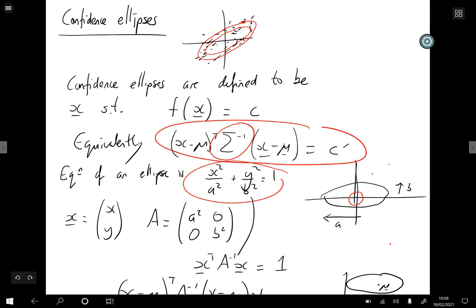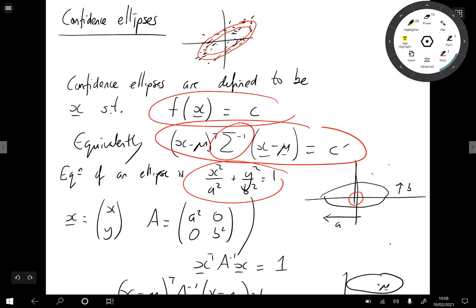So what we've shown is that drawing lines, drawing contours that have constant density, results in ellipses. Lines of constant density are ellipses. What we're going to show now is how to calculate the volume inside each ellipse.